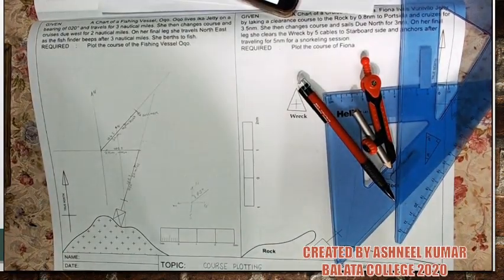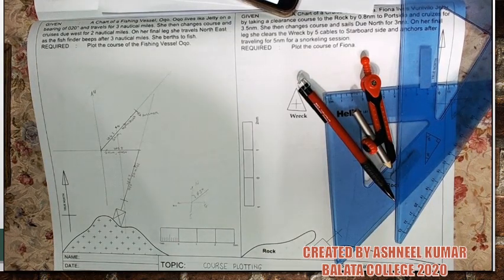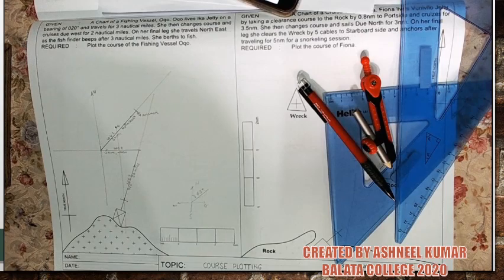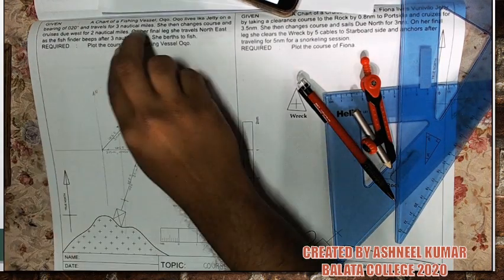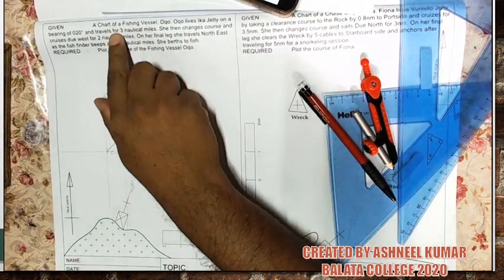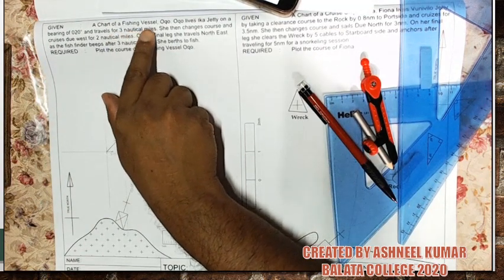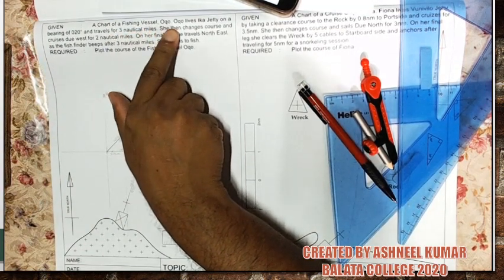The first question has already been done. This is called plotting — the first exercise. I'm going to briefly explain how this question is supposed to be done. If you look at the question, it says a chart of a fishing vessel Ongo.